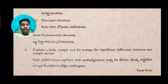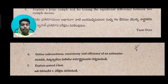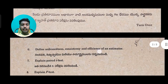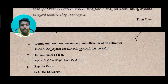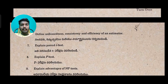Explain the large sample test for testing a significant difference between two sample means — same question, you can choose this. Also define unbiasedness, consistency, efficiency, and estimator. This appeared in the 2020, 2019, and 2018 question papers — you can choose any of these.